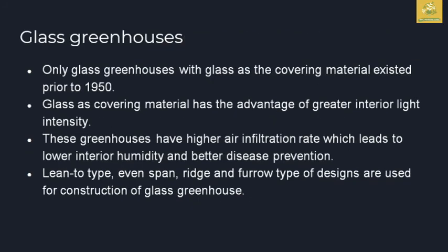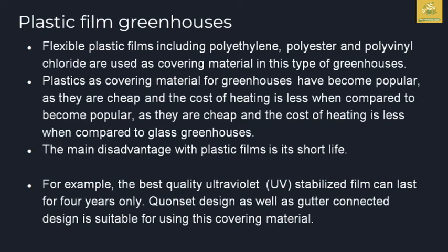Based on the type of covering material, there are glass, plastic, and rigid panel greenhouses. Glass greenhouses have been used since around 1950. A great advantage is the high interior light intensity. Glass greenhouses have a lot of disc-type glazing. In this area, cleaning is required as dust accumulates. The main advantage is that glass will be used in clean greenhouse conditions.